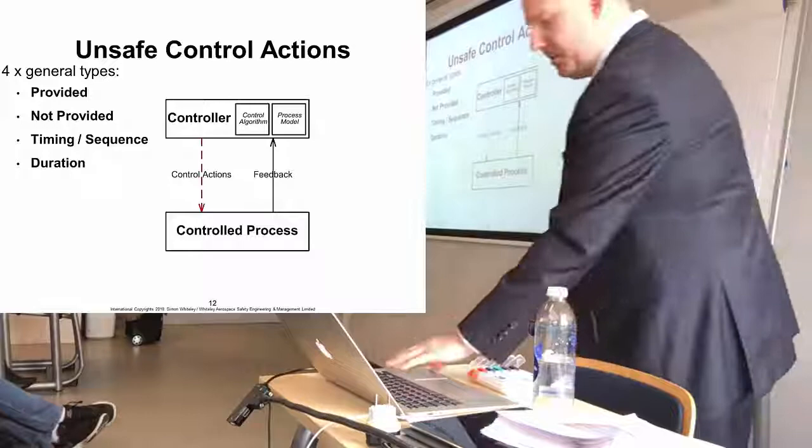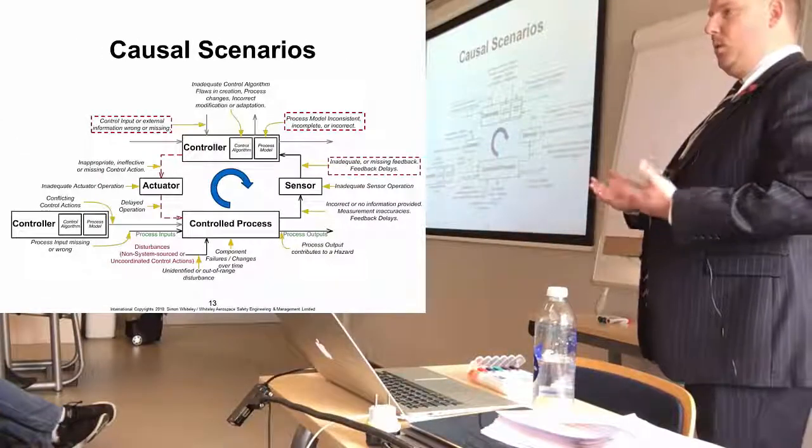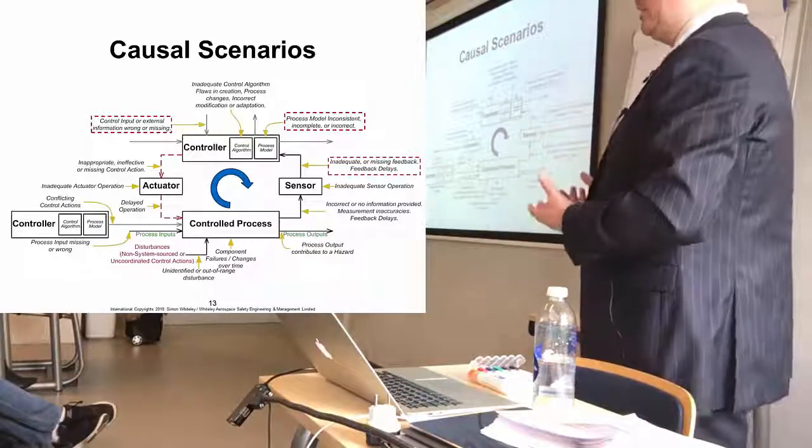Now when we move on to step two of STPA, what we're actually trying to do is understand how do those unsafe control actions come about? What are the causal scenarios that relate to those?